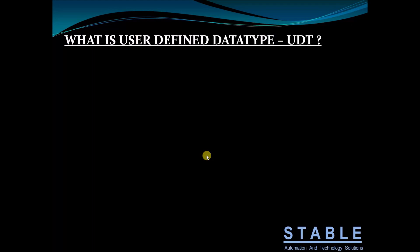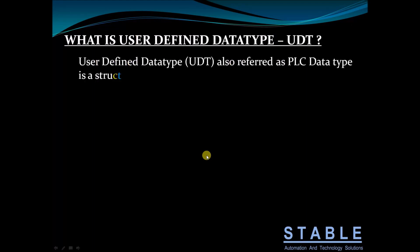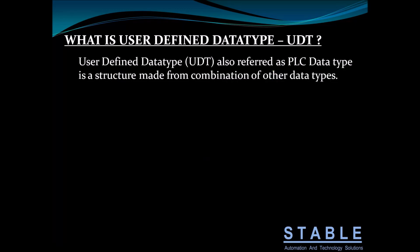What is a user-defined data type? A user-defined data type, also referred to as the UDT or UDD data type, is a structure made from a combination of other data types.